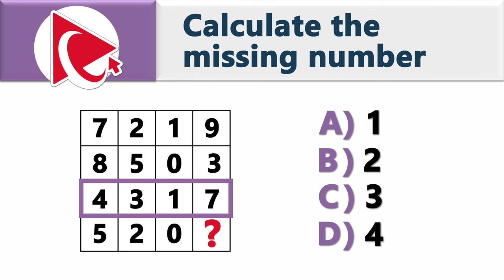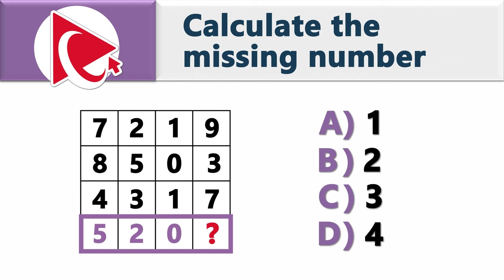Row 3 has numbers 4, 3, 1, and 7. And row 4 has numbers 5, 2, 0, and then comes the missing number, which you need to calculate and select out of 4 possible choices.